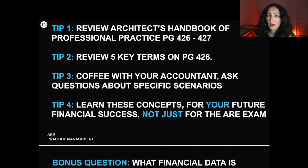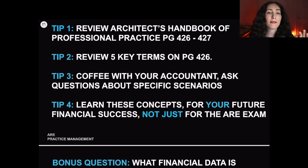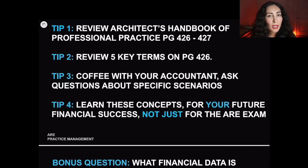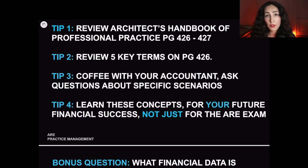My first tip is make sure to review the Architect's Handbook of Professional Practice, pages 426 to 427. Tip number two is review the five key terms on page 426. Tip number three — probably the best tip I can give — is go and have coffee with your accountant. Ask questions about specific scenarios. Whether you work in an architecture firm, a business, or a construction firm, talking to your accountant is probably your single greatest resource, not just for the ARE exam but as a life resource.